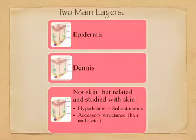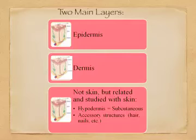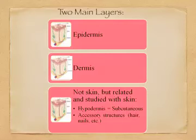There are two main layers of the skin: the epidermis and the dermis. We're also going to study the hypodermis, or subcutaneous layer, which is not officially a layer of the skin, as well as accessory structures like hair and nails. They're not technically skin, but they're accessories found in the same area.